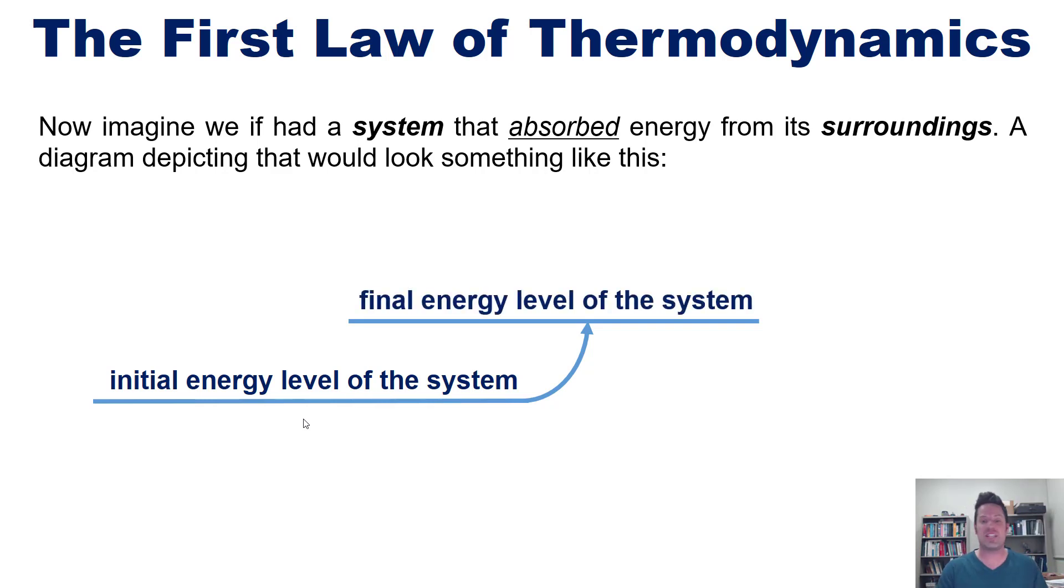Now in this case, again, the difference between the two would be the energy gained by the system. So in this case, the system gained energy by taking it from the surroundings. As before, the difference between those two energy levels would be the delta E or change in energy.